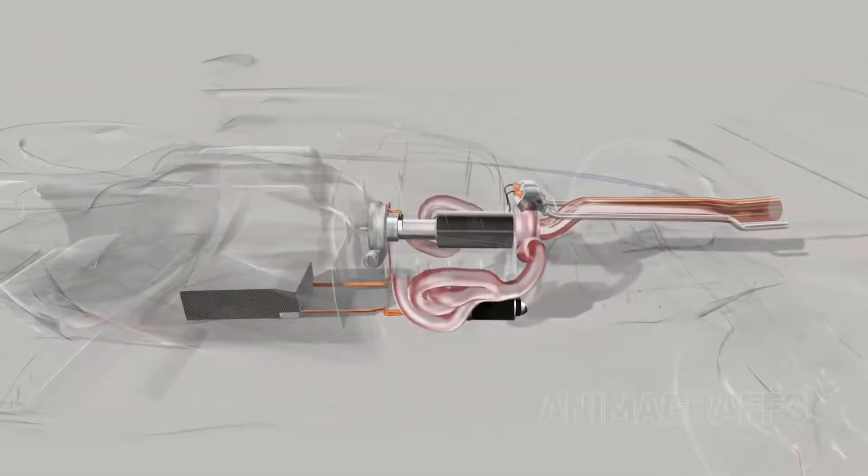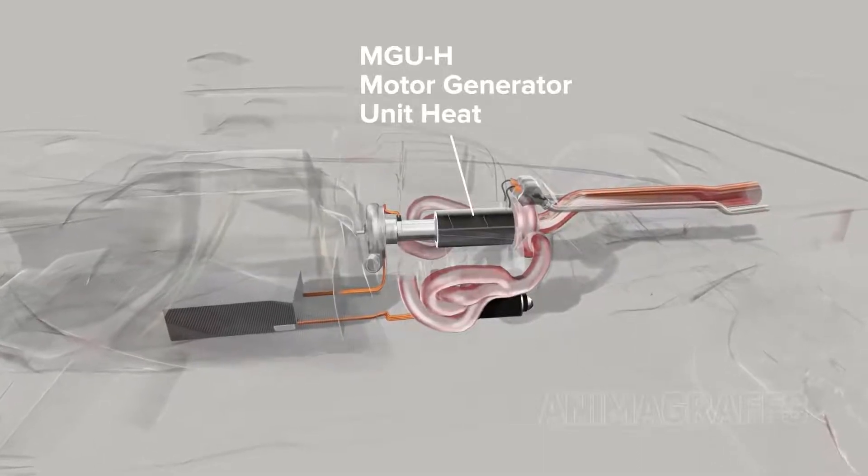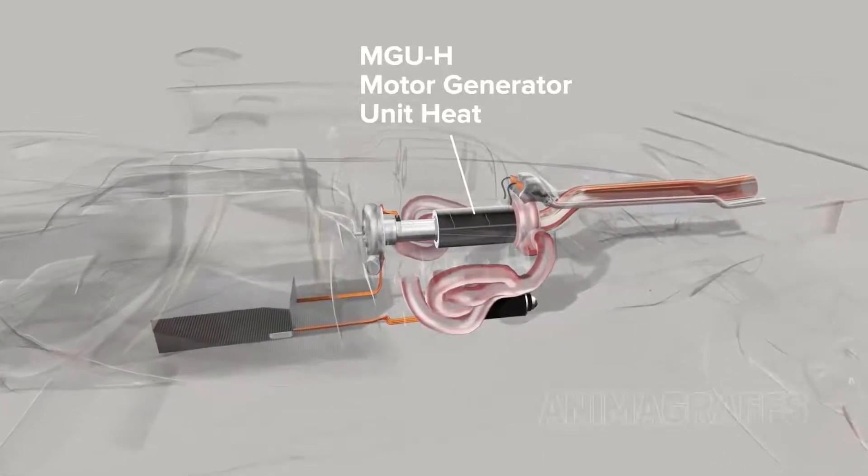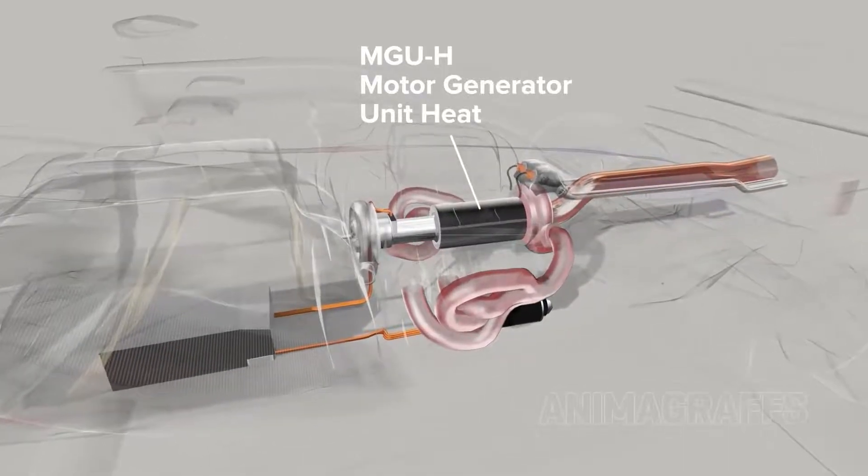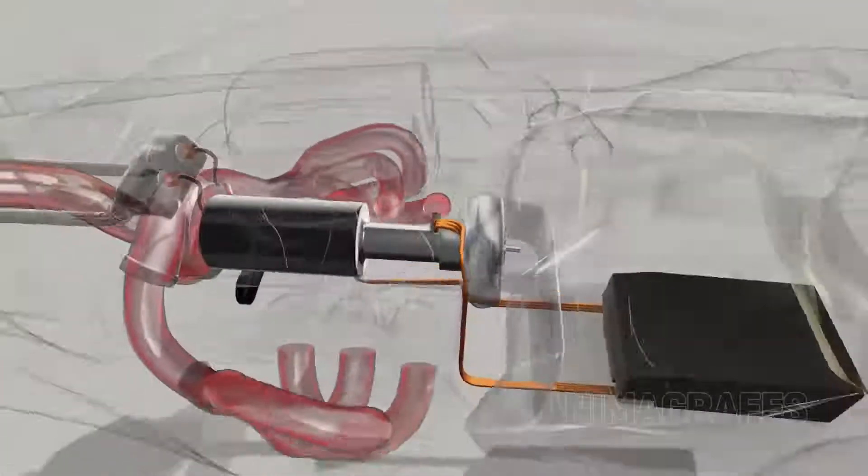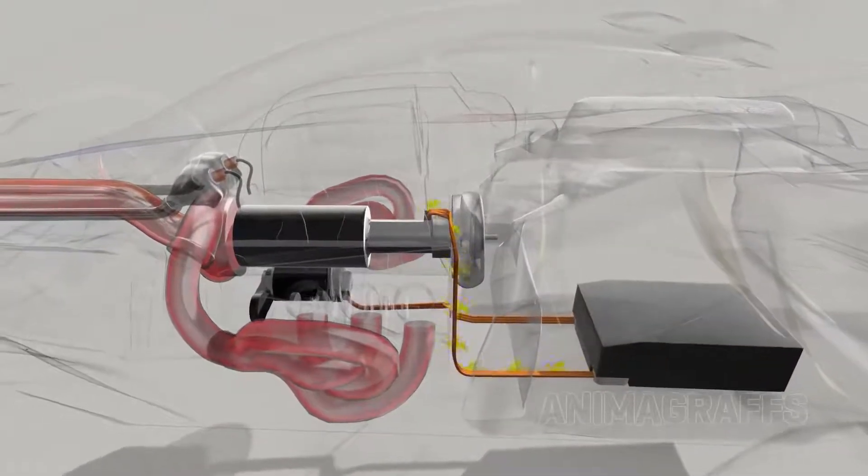A high-tech heat recovery unit sits between these turbo compartments called the MGU-H or motor generator unit heat. Excess heat from turbo gases drives this unit to act as an electric generator to charge the onboard battery.